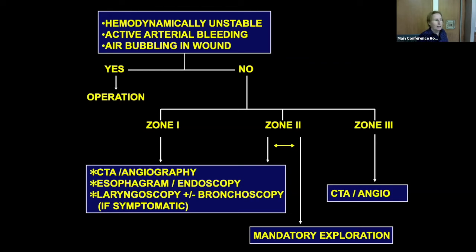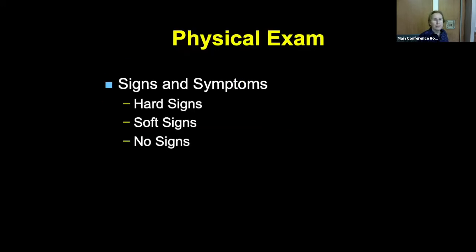Zone three is pretty much CTA or angiography. Zone one is the same, but you have to be concerned about the esophagus and the trachea. Zone two also requires concern for esophagus and trachea, but you have different management possibilities.